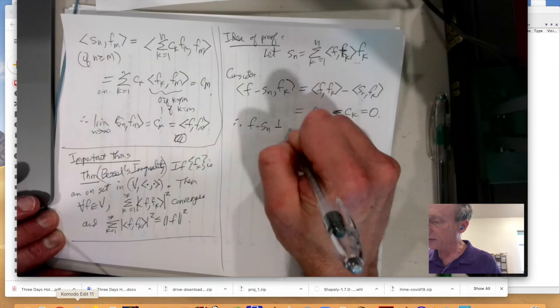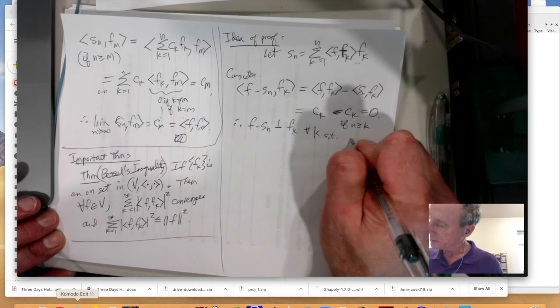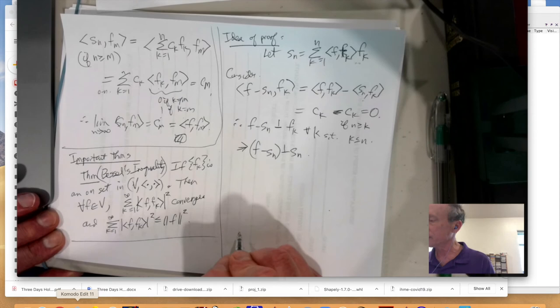So, therefore, F minus SN is perpendicular to FK for all, that's if, oh, by the way, that's if N is perpendicular to K. For all K such that K is less than equal to n. In particular, that implies that F minus Sn is perpendicular to Sn.